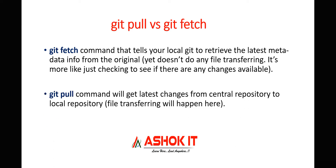Whereas git pull command is used to download the latest changes from the central repository to our local repository directly. Pull is used to download the latest changes, whereas fetch is just to check whether there are any changes available that we need to take or not.